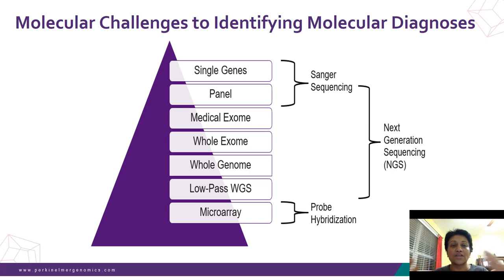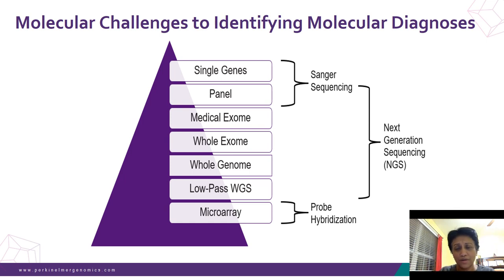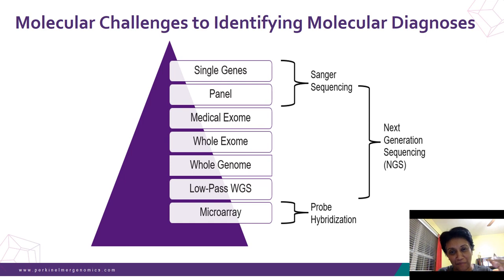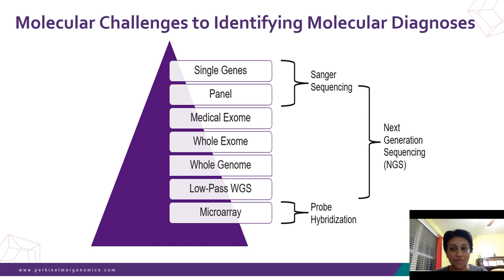Microarrays have been used for over a decade, but are now rapidly being replaced with whole genome sequencing at lower depth. Running the whole genome at 5x will pick up more copy number variants at better resolution than a microarray. It's really important, when a clinical report comes back, to understand what all these methods cover — especially if the report is negative.